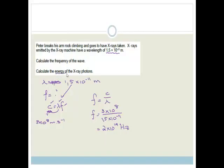Now it says, calculate the energy of the x-ray photons. So when you're thinking energy, you should be thinking the equation E is equal to HF. Where H is Planck's constant. It's on the formula sheet. And it's 6.63 times by 10 to the minus 34.